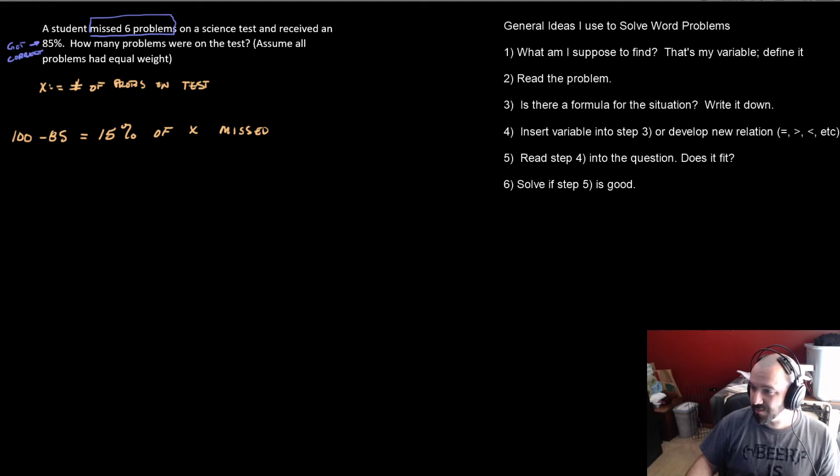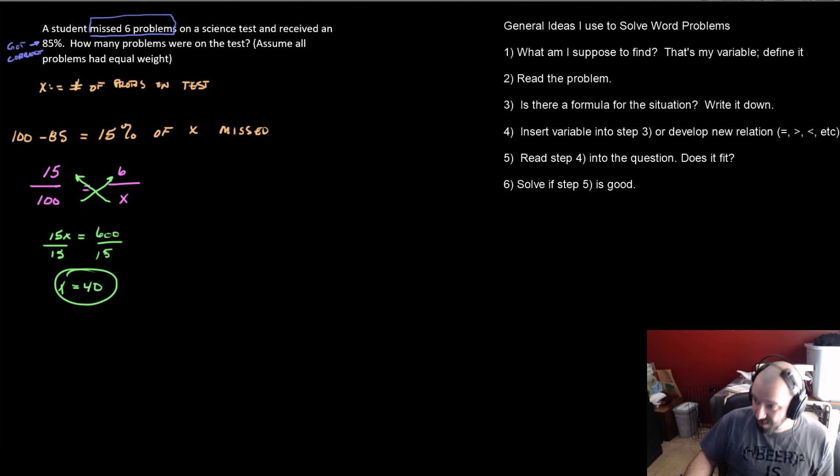So I can set up a proportion here and say, well, 15% must be the same as six, the number of problems I missed, out of however many there are, X. That's fine. So if I can cross multiply here, I get 15X is equal to 600. And if I divide by 15, I get 40. So there must have been 40 problems on the test and notice instantly I get the value of my variable. I'm done at this point. It's over. Let it go. Sing the song.